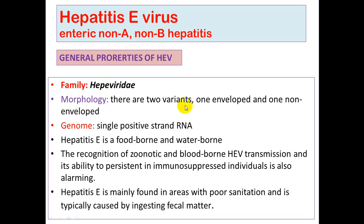The morphology of hepatitis E virus is different from other hepatitis viruses because it has two variants: one is an enveloped virus and the other is non-enveloped. The genome is positive single-strand RNA, meaning it serves directly as mRNA. Hepatitis E is a food and waterborne disease, while hepatitis C virus is a bloodborne disease.